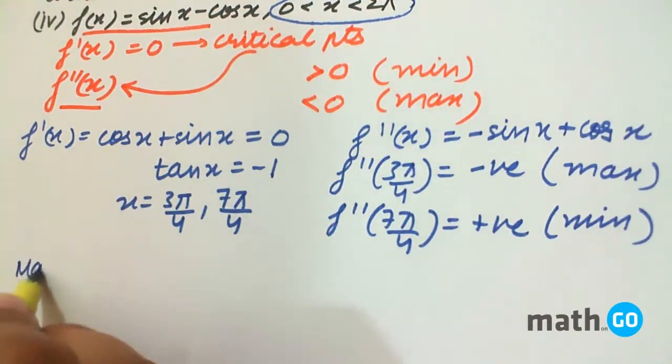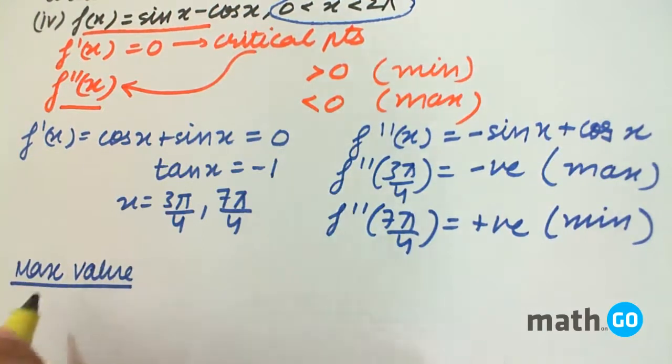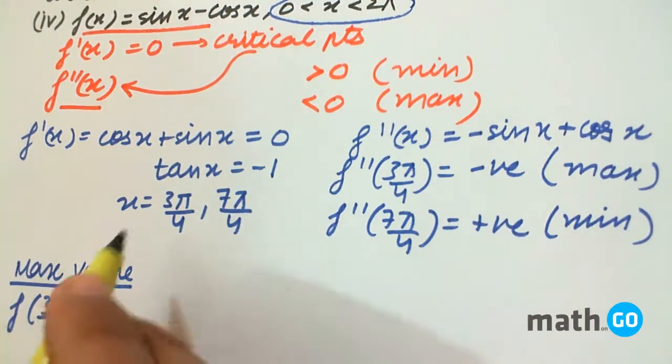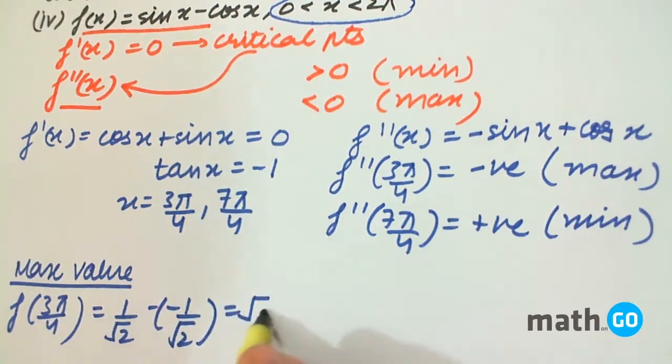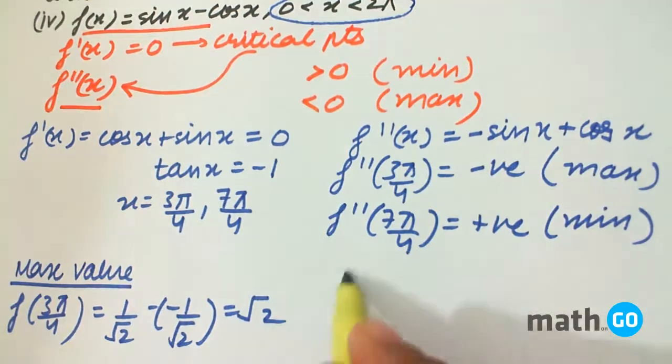So we have maximum value that is f(3π/4), as we have checked above, so it is 1/√2 minus of minus 1/√2, giving √2.